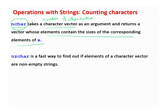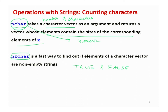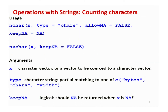We also have one more function called nzchar. The difference between nchar and nzchar is that nchar gives numeric output, while nzchar gives output in terms of TRUE and FALSE. What nzchar does is find out if the elements of a character vector are non-empty strings or not. If they are empty or non-empty, it indicates that using a logical output of TRUE or FALSE.